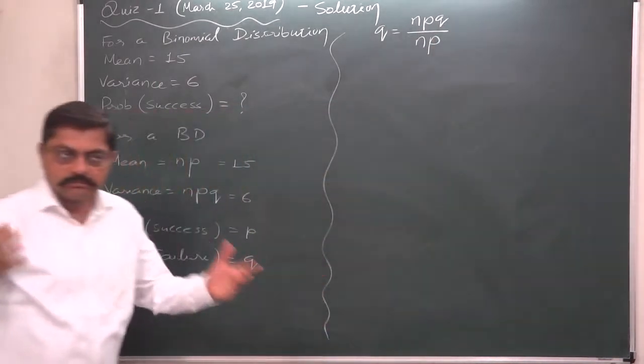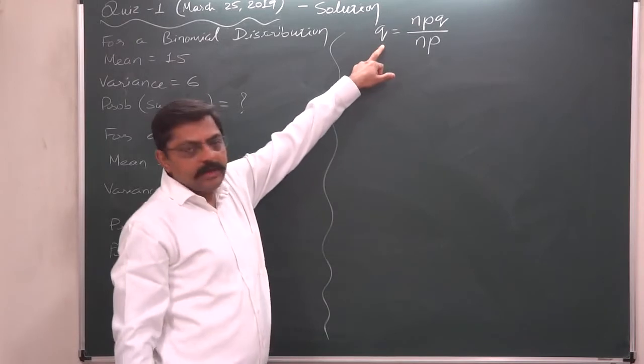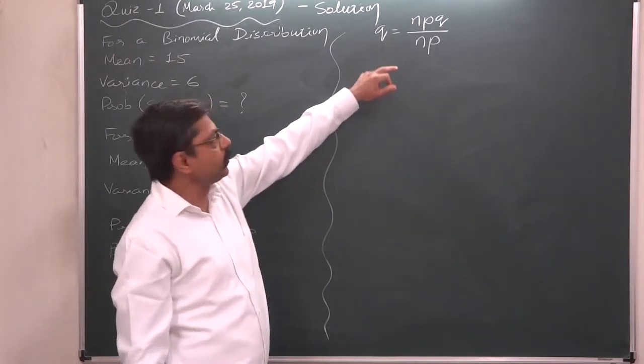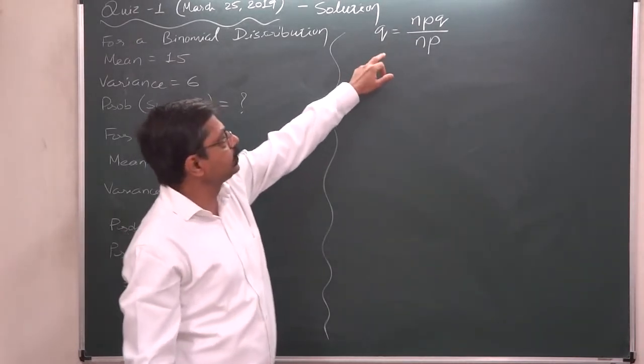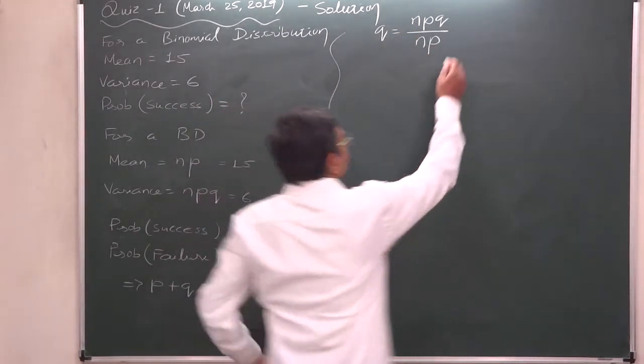So, you can remember a statement also: in a binomial distribution, the probability of failure is the ratio of variance to its mean.